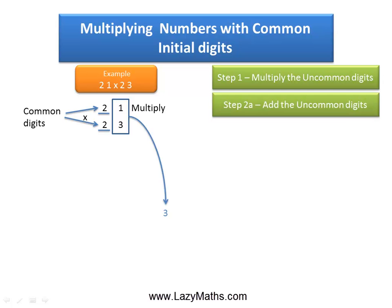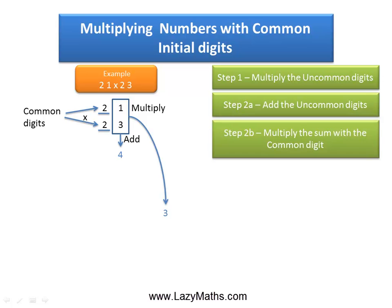The next step is to add the uncommon digits, 1 plus 3 we get a 4, and then we multiply the 4 with the common digit 2.